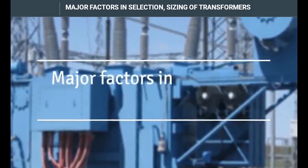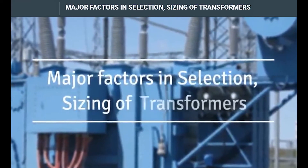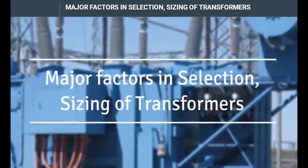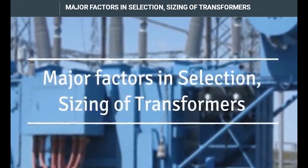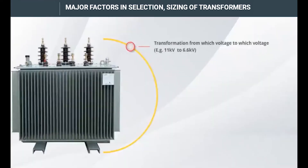Here we have the major factors that affect the selection and sizing of transformers. The first factor is the transformation from which voltage to which voltage — for example, 11 kV to 6.6 kV.